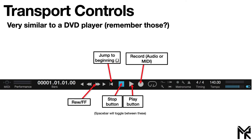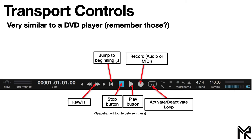Then you have your typical rewind and fast forward buttons — the button to the left rewinds and fast forwards, and you can also jump with the outer buttons. Then you have the activate or deactivate loop function, which lets you loop a section of your track and play it over and over again. This is really helpful if you're trying to get a certain chord progression or melody right, so you don't have to keep restarting it to hear it in context.